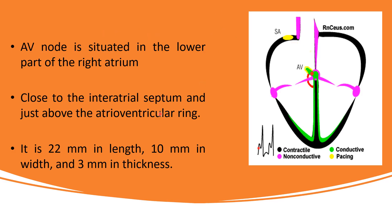The atrioventricular node or AV node is situated at the lower part of the right atrium, close to the intra-atrial septum and just above the atrioventricular ring. It is 22 mm in length, 10 mm in width, and 3 mm in thickness.